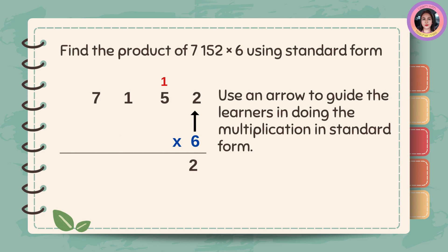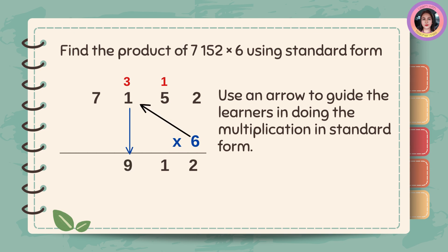Let's find the product of 7,152 times 6 using standard form. 6 times 2 is equal to 12, carry 1. 6 times 5 is equal to 30 plus 1 is equal to 31, carry 3. 6 times 1 is equal to 6 plus 3 is equal to 9. And 6 times 7 is equal to 42. So, the product is 42,912.